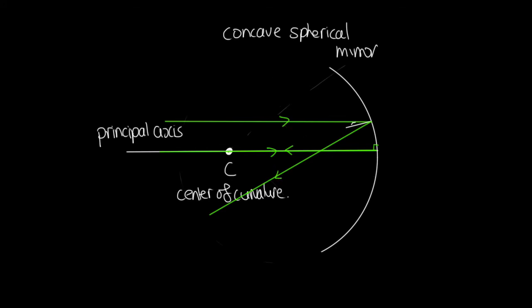And another parallel ray, this time below the principal axis. Here it is. And we've got the angle of incidence equal to the angle of reflection again. So let's draw it reflected back. It's reflected like this. And another parallel ray even further from the principal axis. Here's our normal. And again, the angle of incidence is equal to the angle of reflection. So we can draw our reflected ray down here.